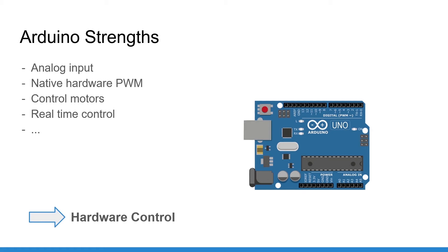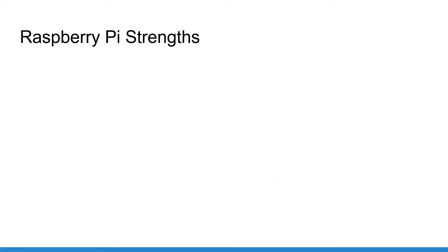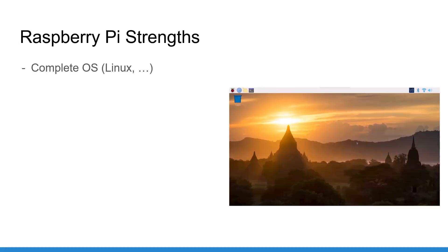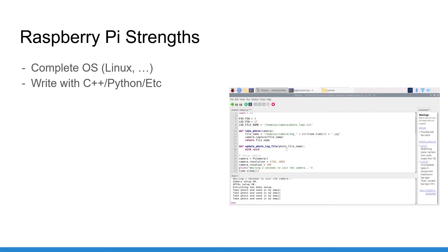Now let's see when Raspberry Pi is better than Arduino. On Raspberry Pi you get a complete operating system — for example Linux with Raspberry Pi OS — and you can install many more OSes such as Ubuntu, Android, and even some versions of Windows. With a complete operating system you have a world of possibilities not available on Arduino. On the Raspberry Pi you can program with C++ or Python, or in fact any programming language you want.